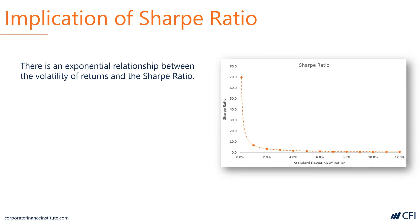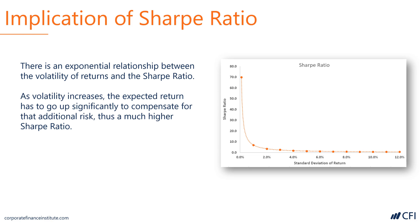Let's look at the implications of a Sharpe Ratio. You can see the relationship between volatility and return here. The higher the standard deviation of an investment's return, the lower the Sharpe Ratio is most likely to be. As the volatility of an investment increases, the expected return must go up exponentially to compensate for that risk.